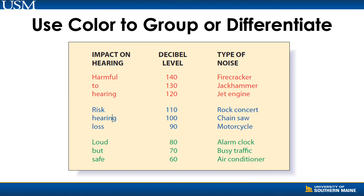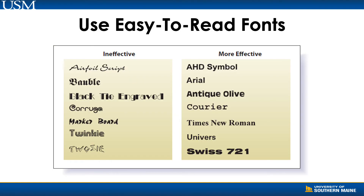We mentioned using color. As you can see here, color was used not just to group information, but also to distinguish between categories of information. When it comes to fonts, you can see how the fonts on the left might look interesting but can actually be difficult to read. It's much more effective to pick fonts that stand out, that are simple, and that provide some contrast when used on a slide.